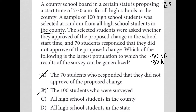Choice C: all high school students in the county. Here we only spoke to 100 students, but we assume there are a whole lot more students, which would require a generalization. If we say 70% of students do not approve of this new start time, we're saying based upon this study of only 100 students that 70% of all the students in the county do not approve. So I like choice C.